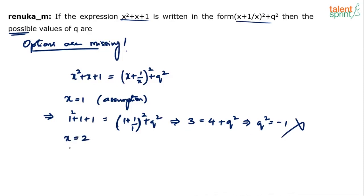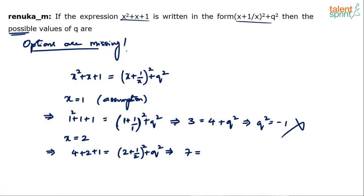If x=2, we get 4 plus 2 plus 1 equals (2 + 1/2)² plus q². The left side is 7. The right side is (5/2)² plus q² = 25/4 plus q². So q² equals 7 minus 25/4, which comes out to 3/4.